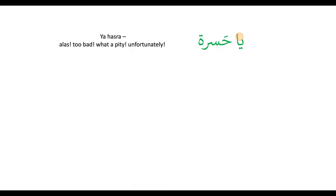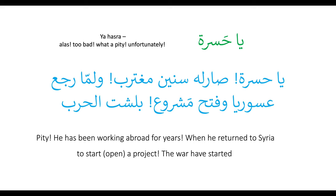Here we are using it with this phrase: 'yahasra' — oh what a shame. In the example: Sahar lu sneen mgtrib — he has been working abroad for years. Mgtrib refers to somebody working abroad, an immigrant or expat. When he returned to Syria and opened a project, the war had started.